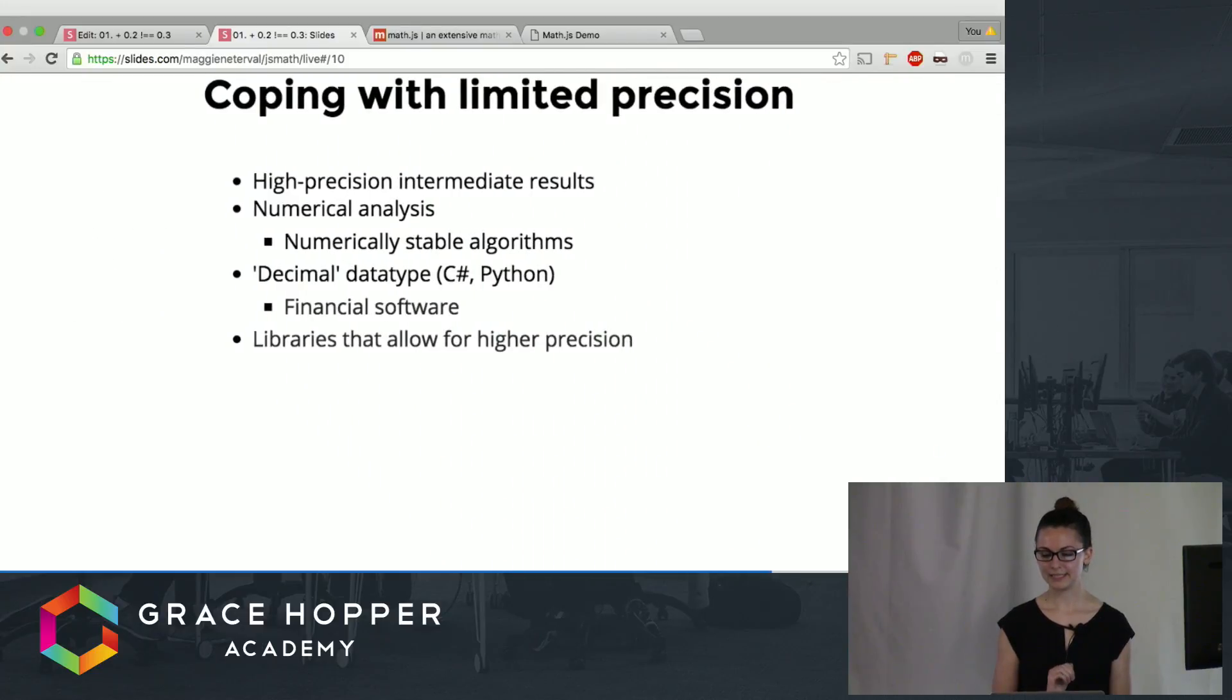So in order to deal with this there are several strategies. One can write algorithms that would save intermediate results at a higher precision than that which you want the result to be. For example if you knew you needed your answer to be of a double level of precision you could store your intermediate numbers as quadruple to prevent the final answer from being too off base.